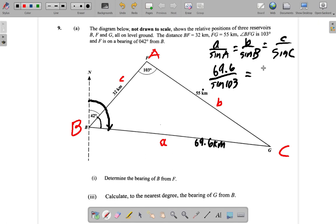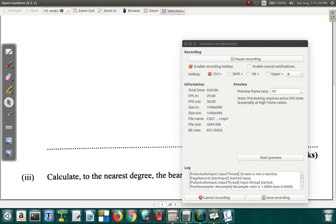small b here, 55, over sine of the angle B. In this case it's ABC, the sine of ABC. Now what is 69.6 over sine 103?